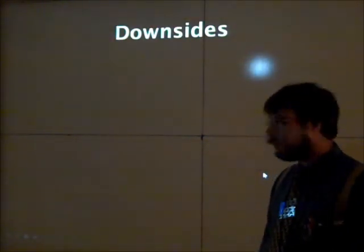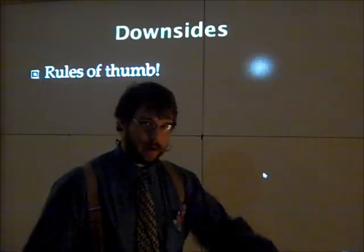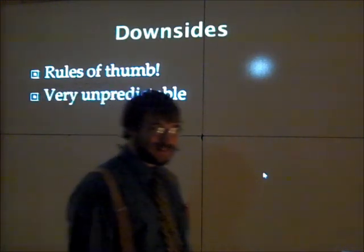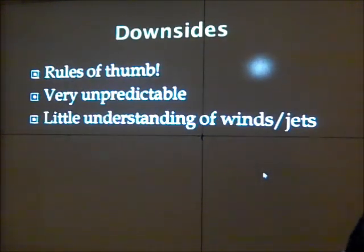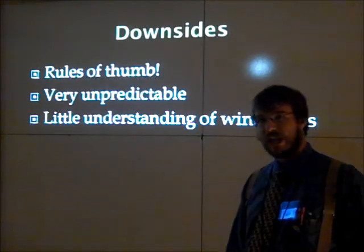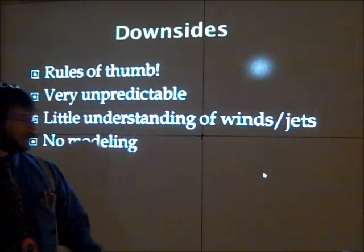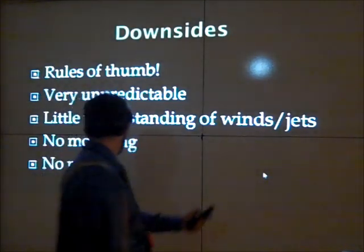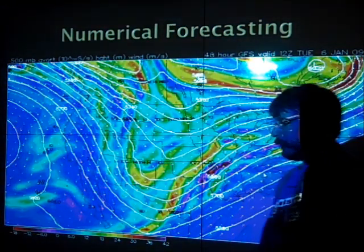There are several downsides to synoptic forecasting. It relies very heavily on rules of thumb — like 'I feel it in my bones, it's gonna rain.' It's not really scientifically standardized, which leads to a lot of problems. It also doesn't really take into account what the winds or the jet stream are going to be doing. There's no modeling and there's no math, and because there's no math, there's no fun.